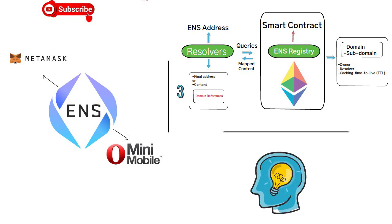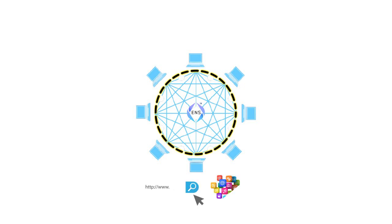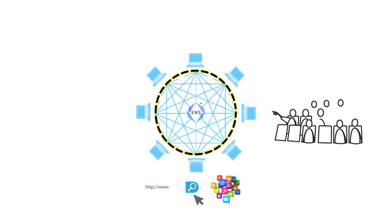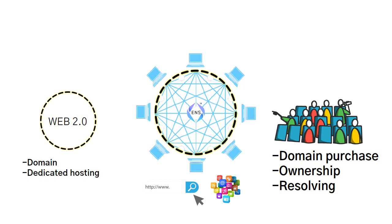So why do we think ENS domains are going to be important for Web 3.0? ENS offers a decentralized alternative to address complex resources on or off the blockchain with easy-to-read names. It is also a complementary innovation on our journey to decentralizing websites and application hosting entirely. Instead of having domain name registrars like GoDaddy or Namecheap and DNS servers, ENS has two decentralized components that cut out these middlemen and let the community handle both domain ownership and resolving.